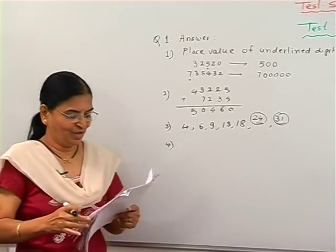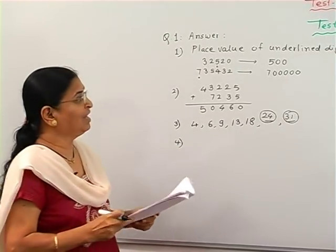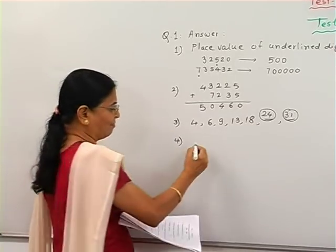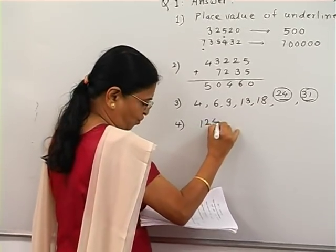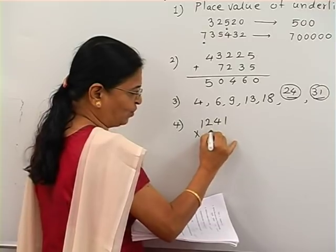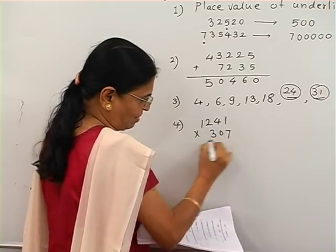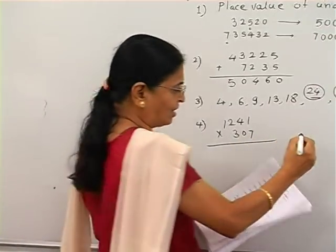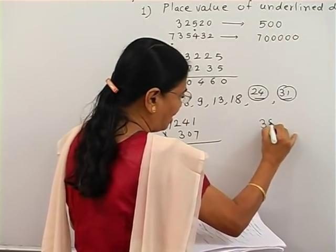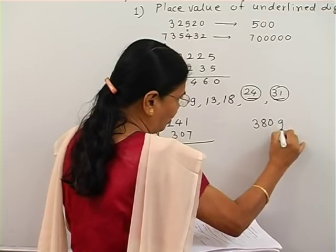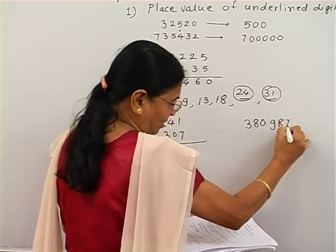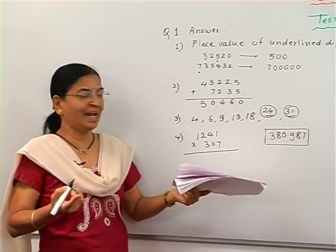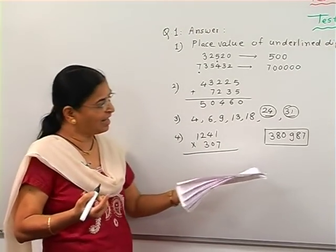So multiply 1,2,4,1 into 3,0,7. The answer is 3,8,0,9,8,7. How many have got it correct? See if you have got it correct.